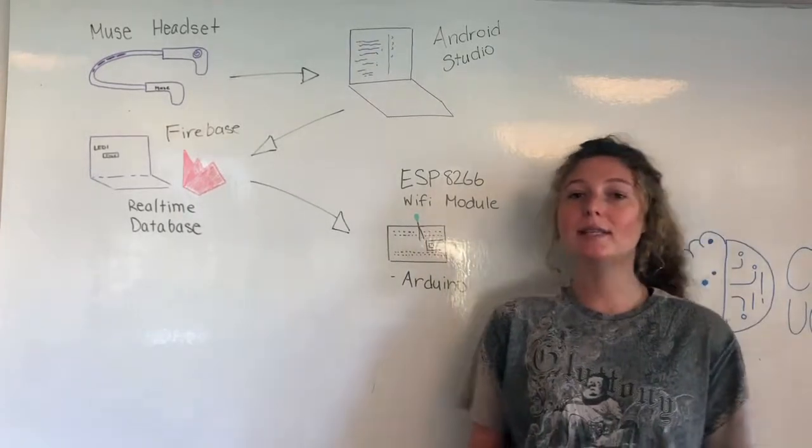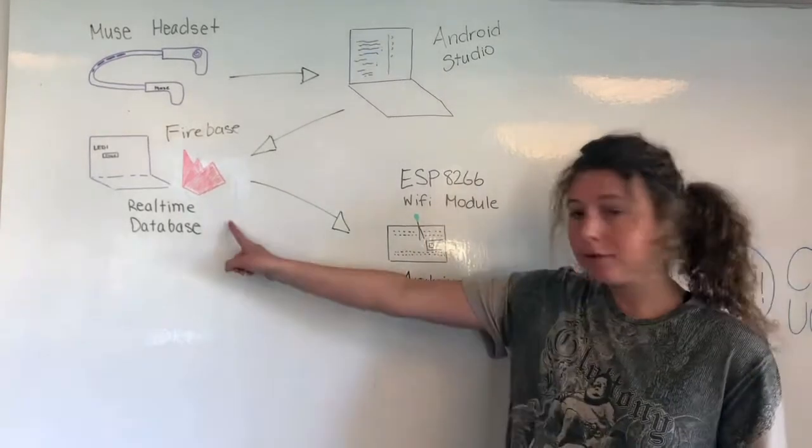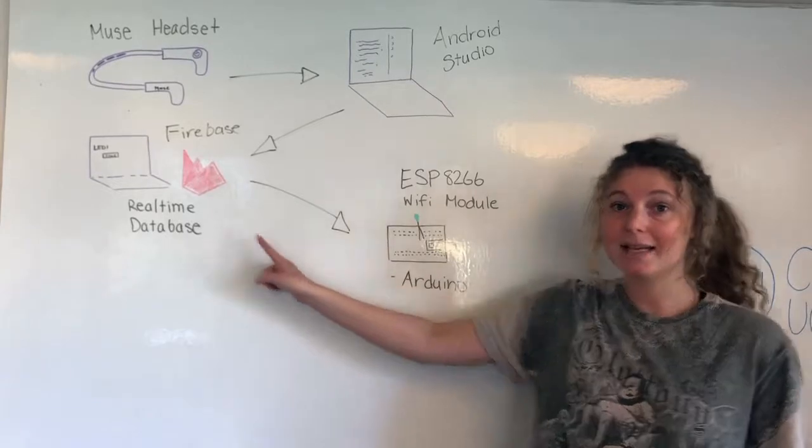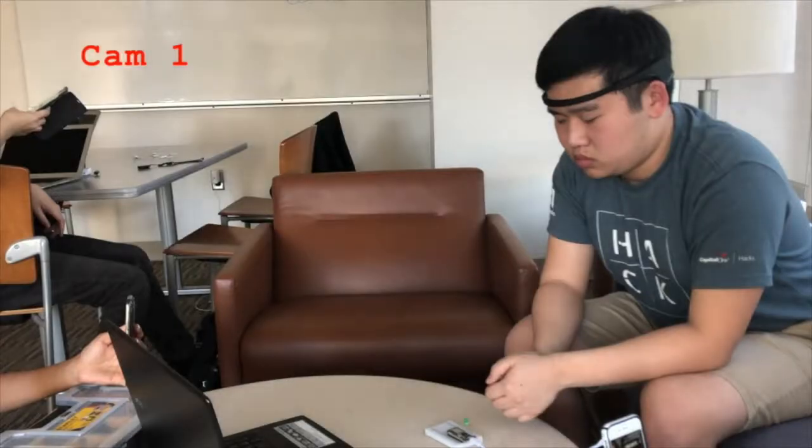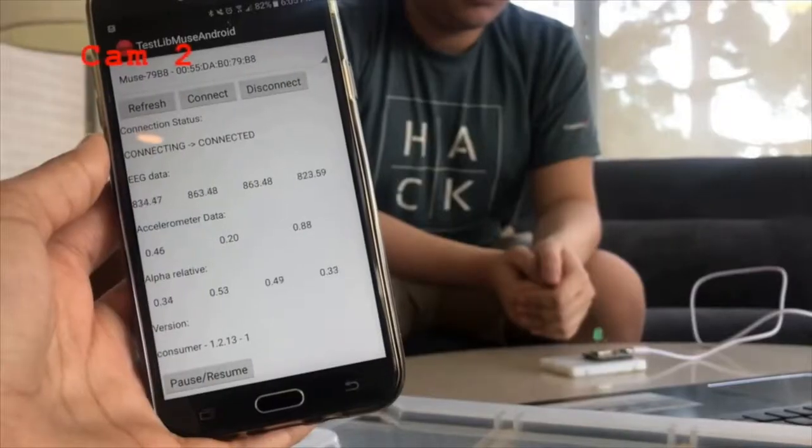Finally, the Wi-Fi module reads the state of the LED from the Firebase Realtime Database and tells the microcontroller to turn the LED on or off. And ta-da, the light turned on.